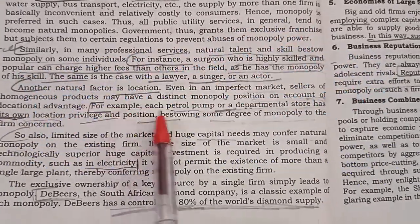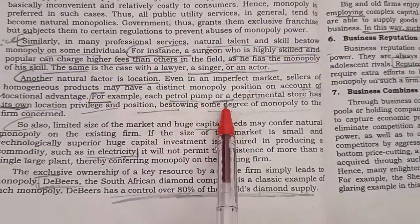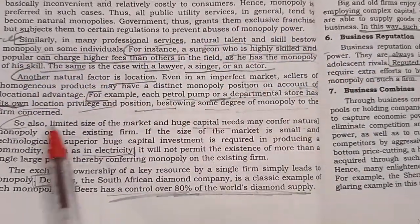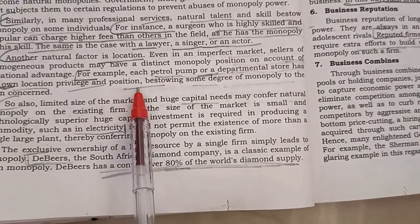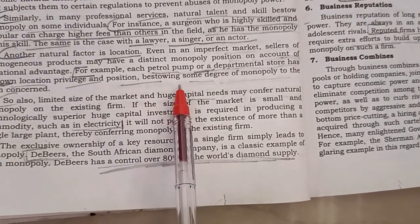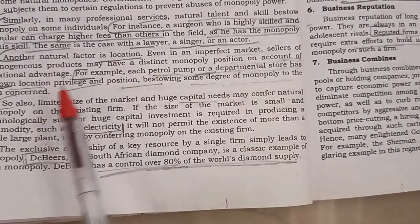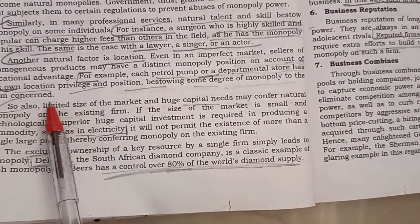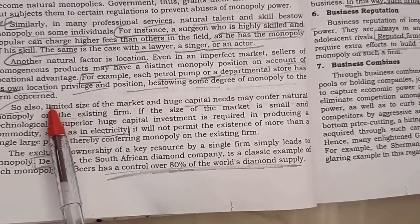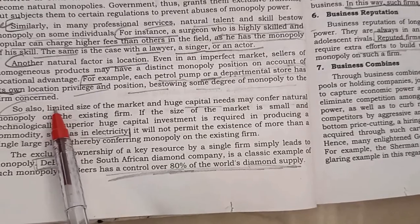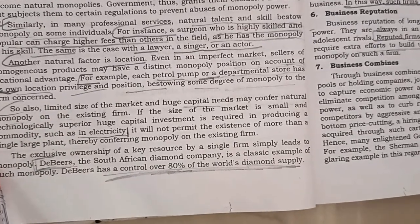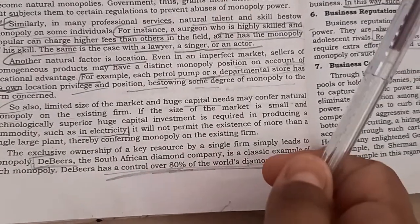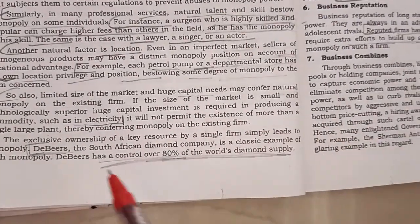The first source of monopoly power is location. For example, a petrol pump and a departmental store have their own location privilege and position, giving a degree of monopoly power to the firm. Consumer captivity based on location is one such source.